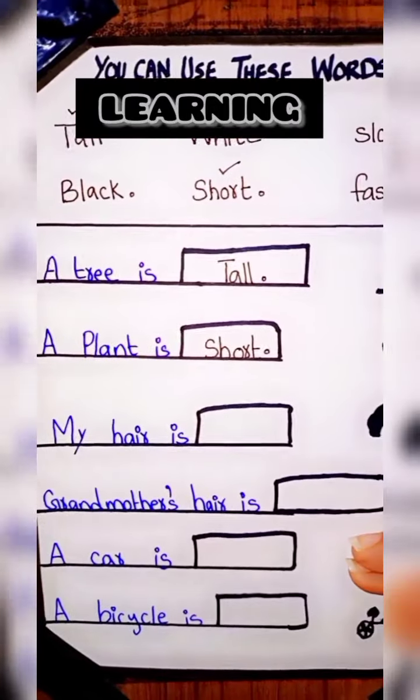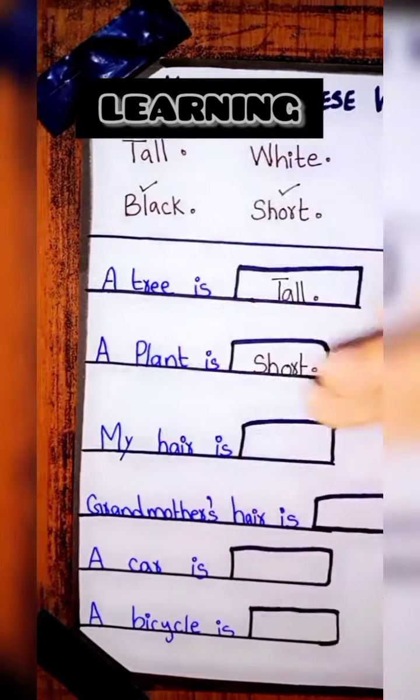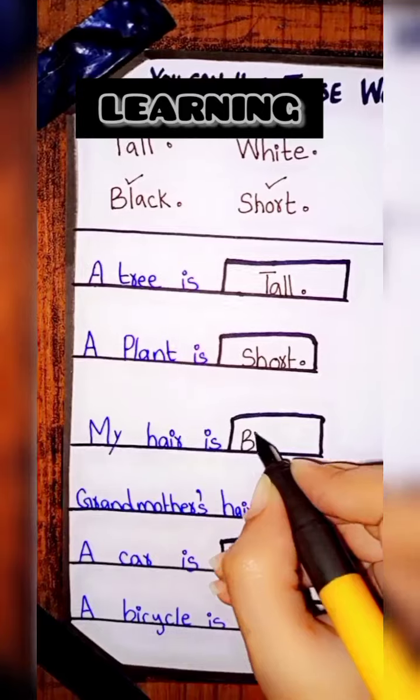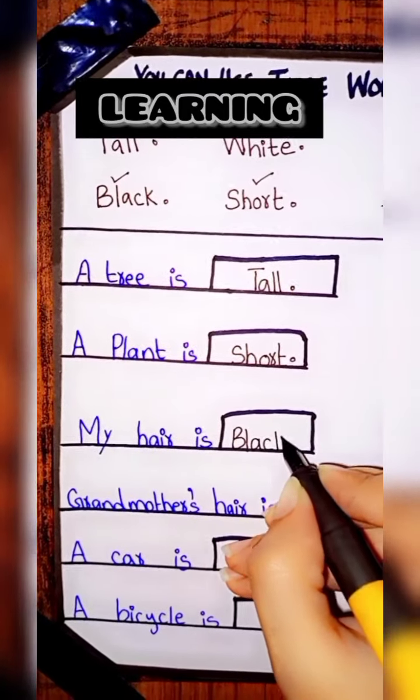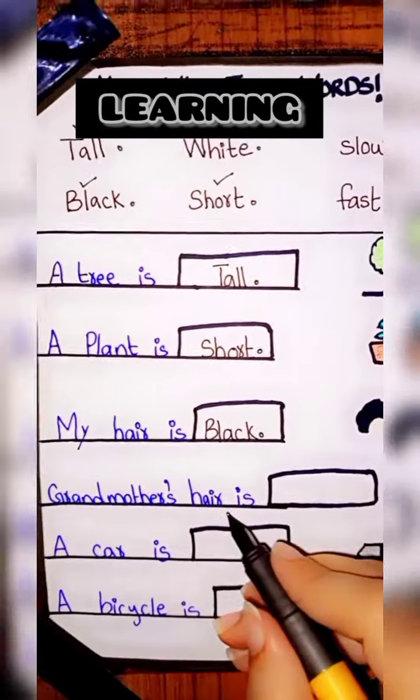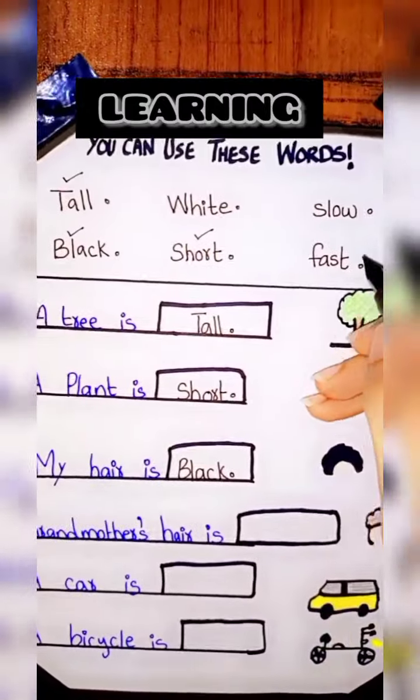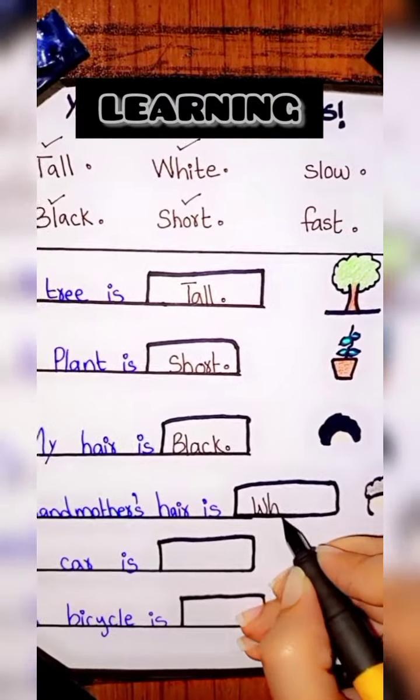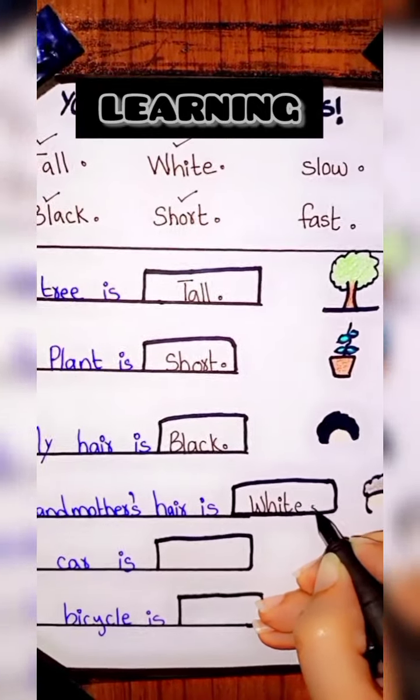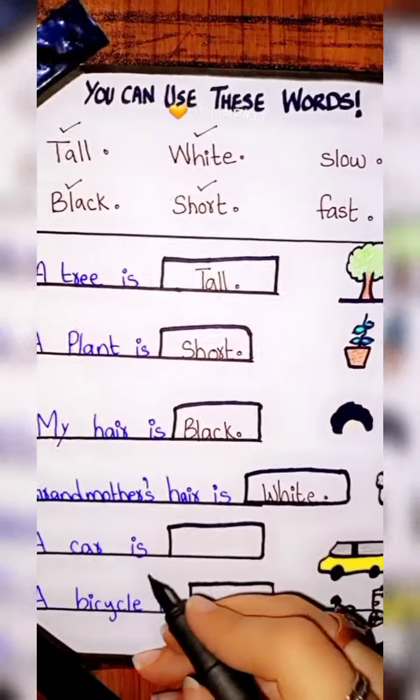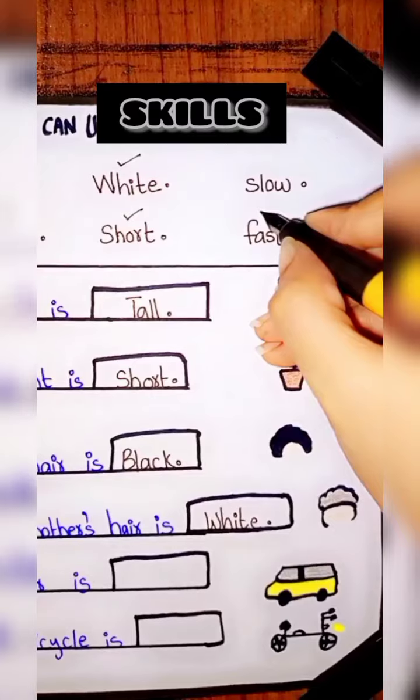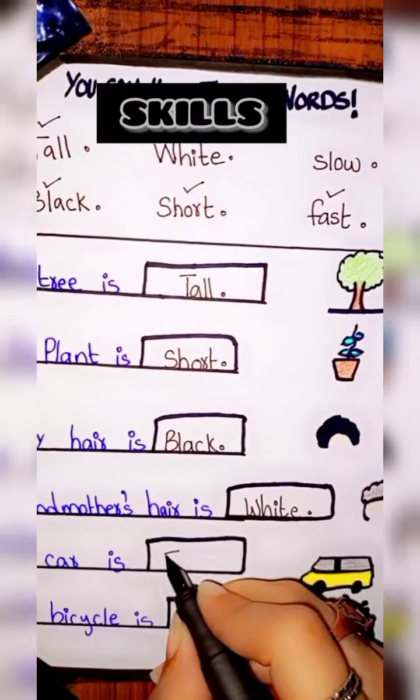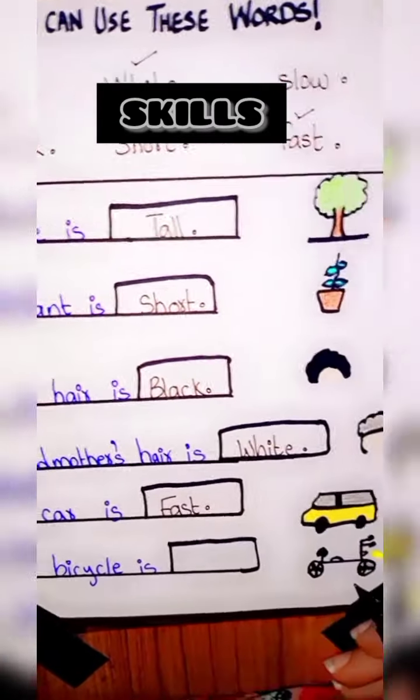My hair is black. B-L-A-C-K black. Okay, and then grandmother color is white. This is white, so I will put a tree here and fill it here. So our car is fast, fast, fast, fast. Bicycle is slow.